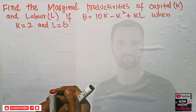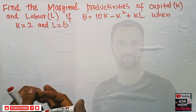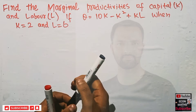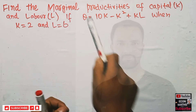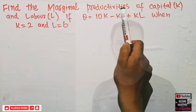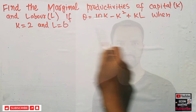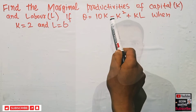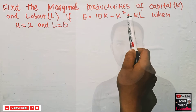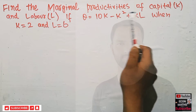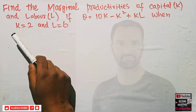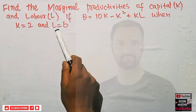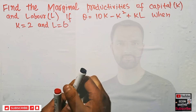In this video we will learn how to find the marginal productivity of capital and labor from a given production function. The question is: find the marginal products of capital and labor if the production function is Q = 10K - K² + KL, where K is capital and L is labor, when K = 2 units and L = 6 units. We need to find MPK and MPL.